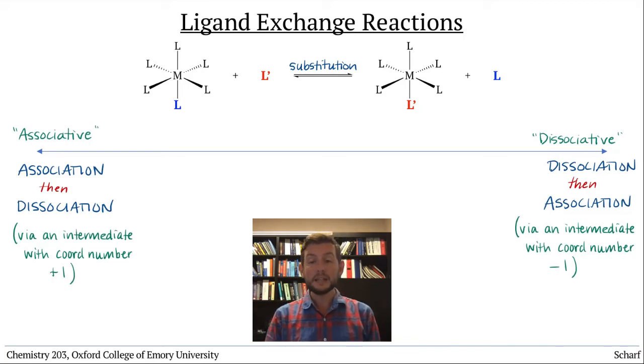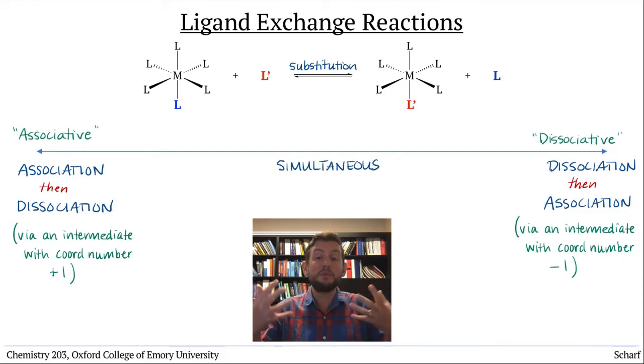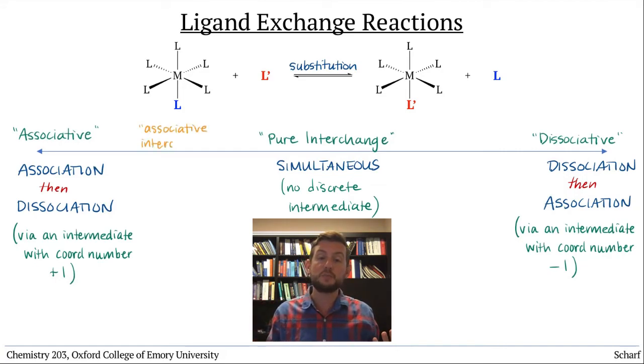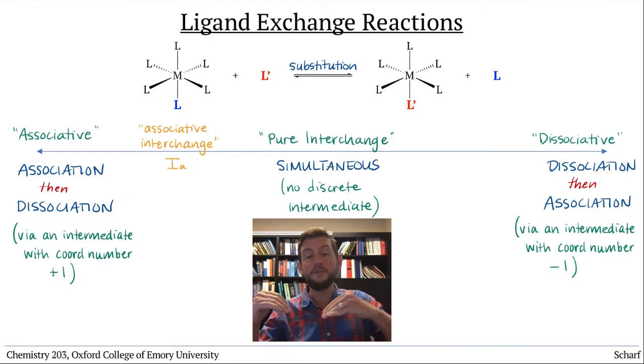In the middle of the spectrum, both dissociation and association can occur simultaneously without a discrete intermediate. If both the association and dissociation happen exactly in tandem, this is called a pure interchange mechanism. But the mechanisms can also be other points along the continuum. An associative interchange mechanism involves a new ligand associating, but before it's fully associated, the outgoing ligand begins dissociating.